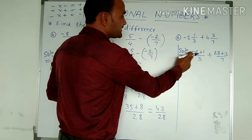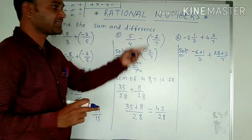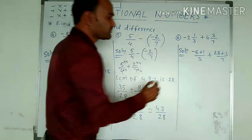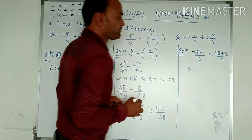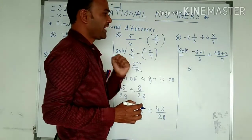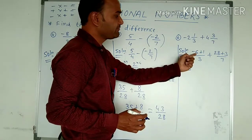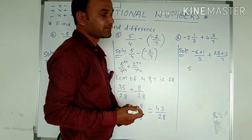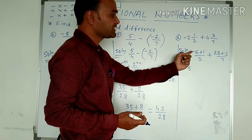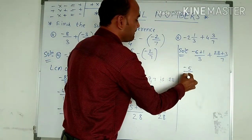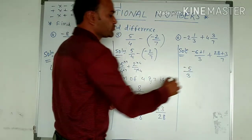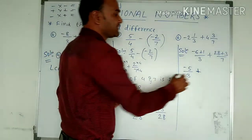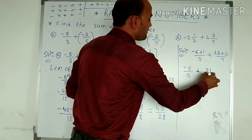So minus 6 plus 1: since one is minus and the other is plus, minus into plus becomes minus, so 6 minus 1 gives 5. But 6 is bigger and has the minus sign, so we write minus 5 upon 3. And 28 plus 3 becomes 31, so 31 upon 7.